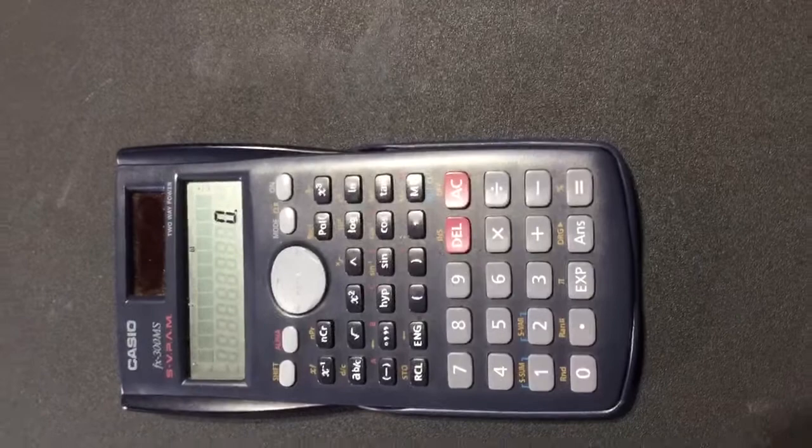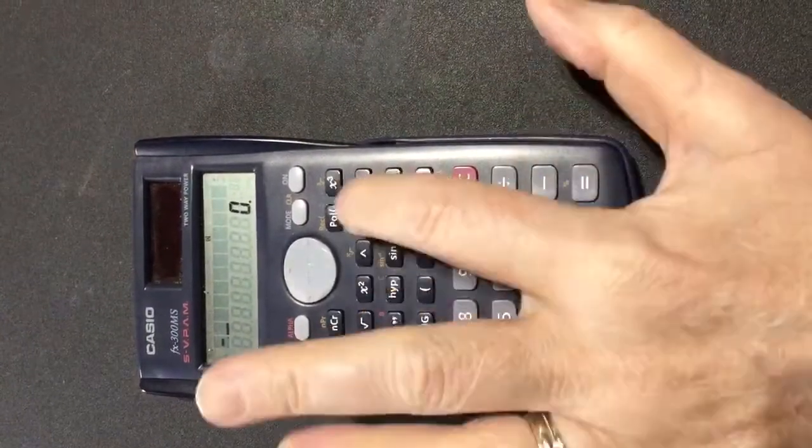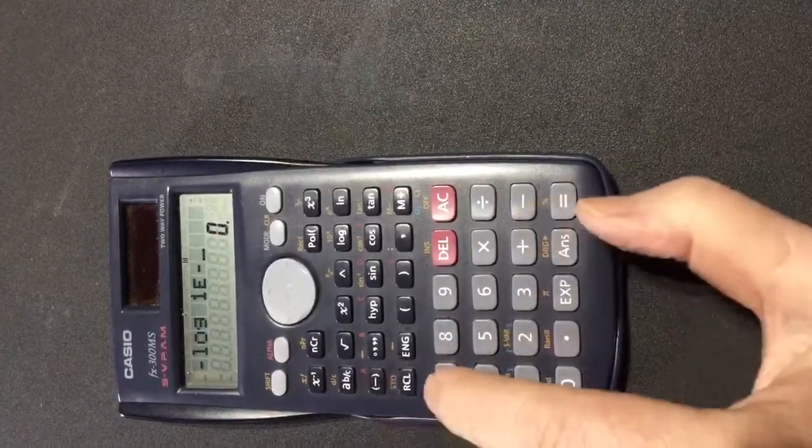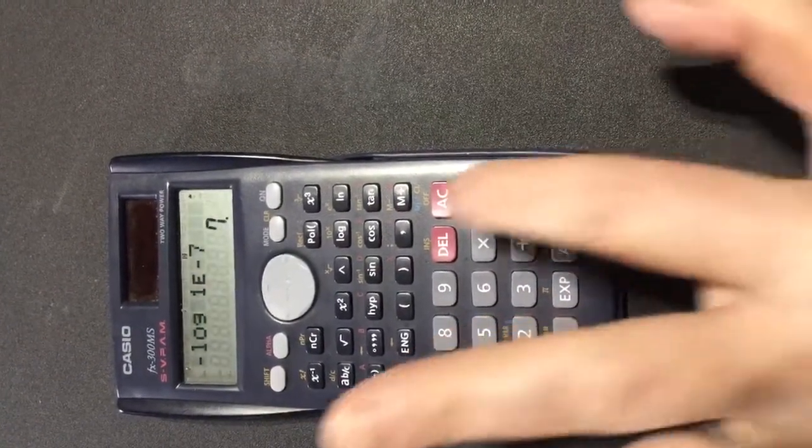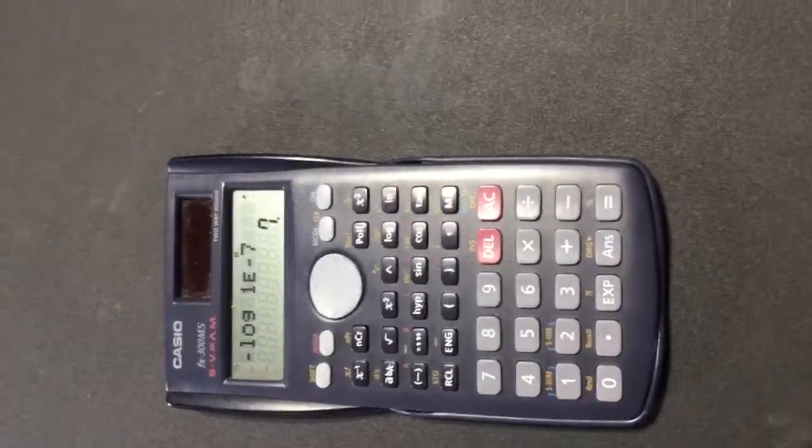Let's do it for 1 times 10 to the negative 7th. We do the negative log of 1 exponent, negative 7 equals, and you can see that fine, 7. That's it. Thank you.